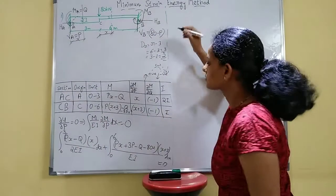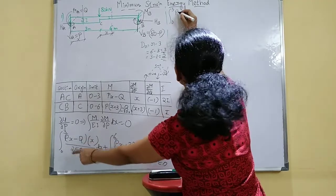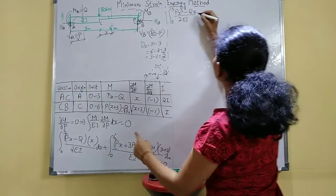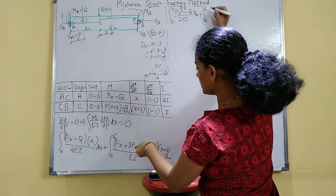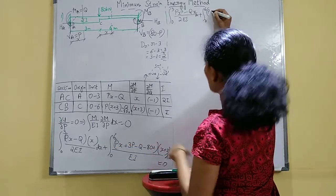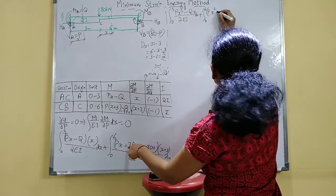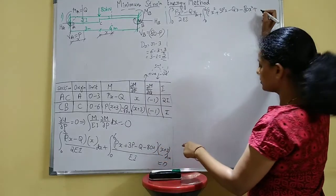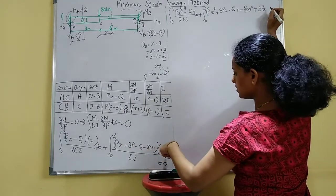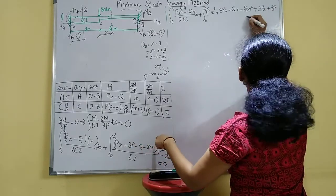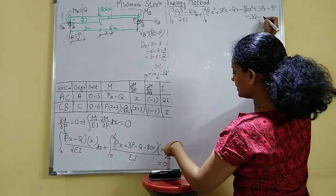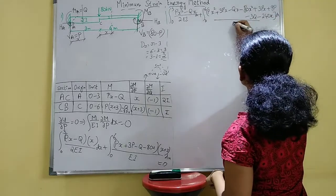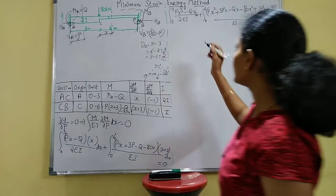Simplify by removing brackets. From 0 to 3: (PX² − QX) / 2EI dx. From 0 to 6: multiply through by X to get PX² + 3PX − QX − 80X², then multiply by 3 to get 3PX + 9P − 3Q − 240X, all divided by EI equals 0.